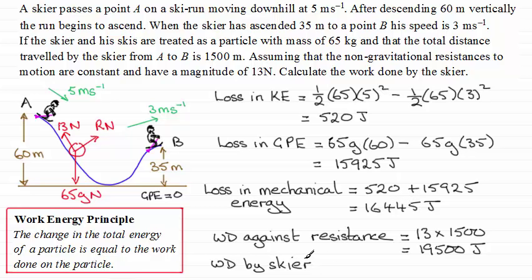So the work done by the skier has got to be the difference then between the two energy values here. So in other words, it's going to be the 19,500 joules minus the 16,445 joules. Work that out and you end up with 3,055 joules. That's the input that the skier has got to put in, in order to keep the balance, this loss of energy.